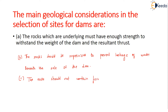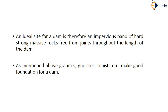The ideal site for a dam is therefore an impervious band of hard, strong, massive rock which is free from joints throughout the length of the dam. Granites, gneisses, and similar rocks make very good foundations for a dam, as they are impervious and strong.